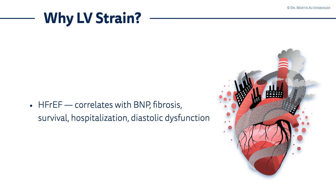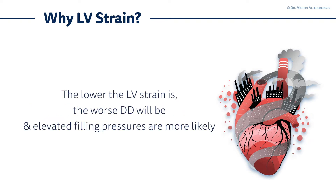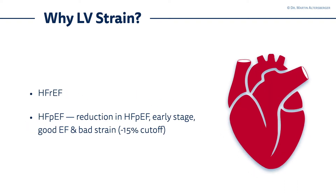In heart failure with reduced ejection fraction, LV strain correlates with the natriuretic peptides — the BNP — also with fibrosis of the heart, with survival, hospitalizations, and of course with diastolic dysfunction as well. So the lower the LV strain, the worse diastolic function will be and elevated filling pressures are more likely.